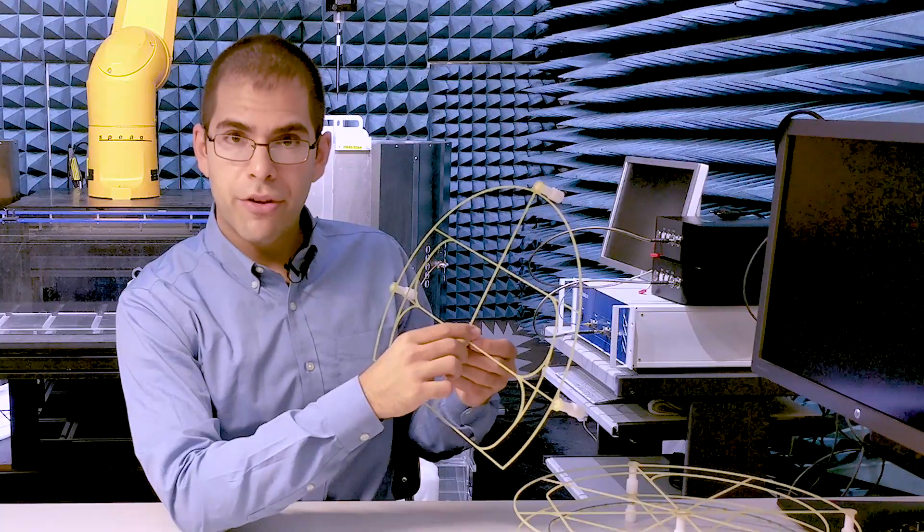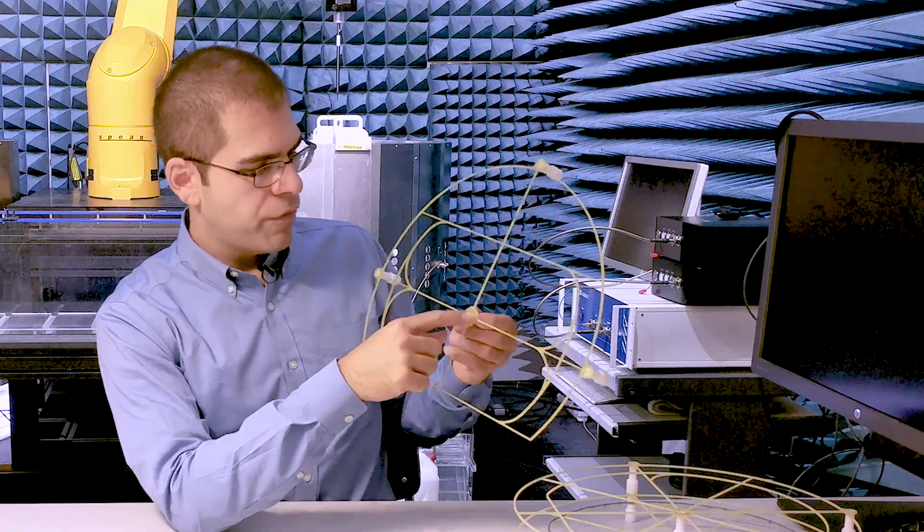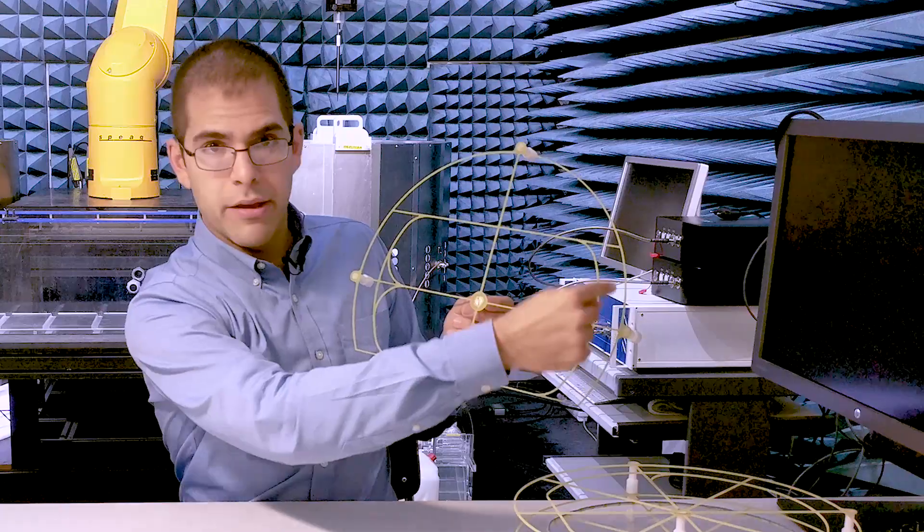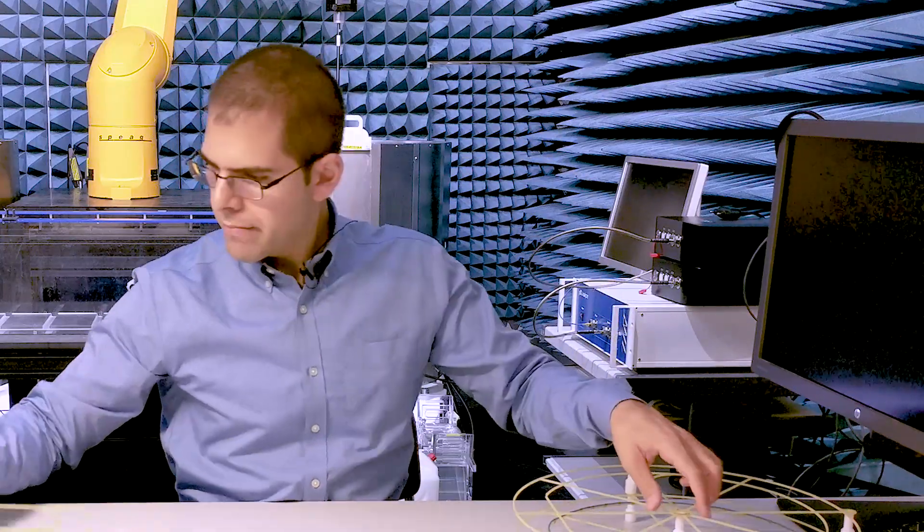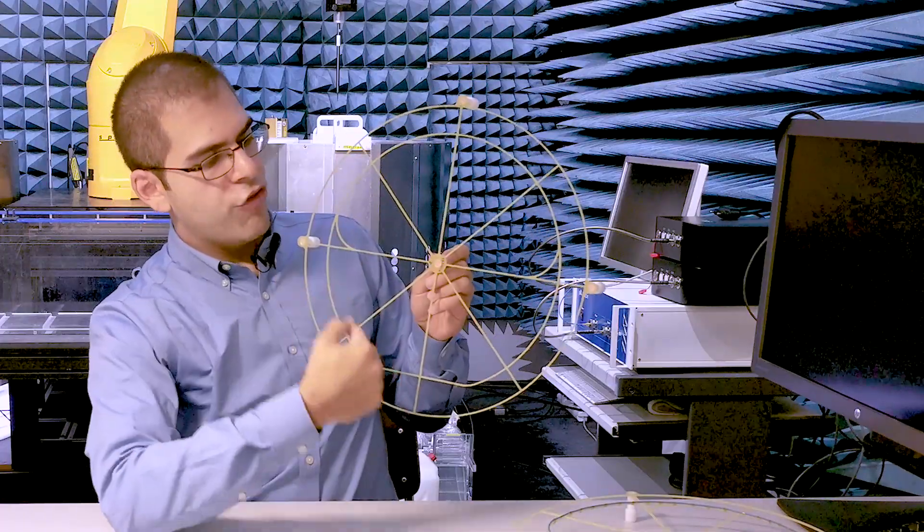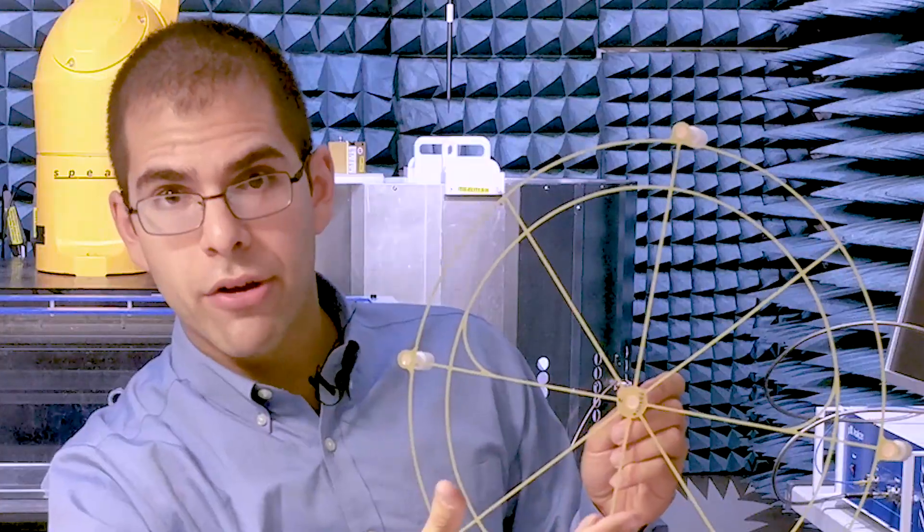We have six different options for the routings that we've used so far. One is an oval shape, like this. One is an S-shape, like this. And one is an E-shape, like this. Each routing can be used clockwise or counterclockwise, for a total of six possibilities.